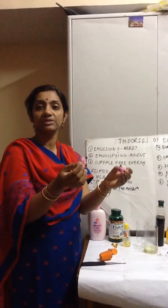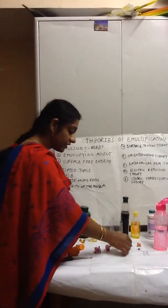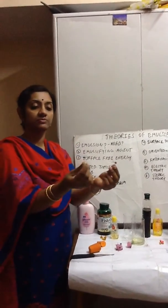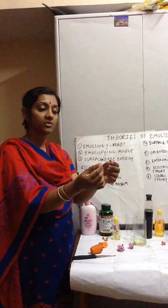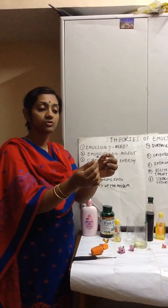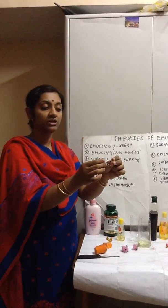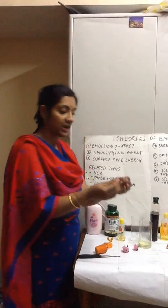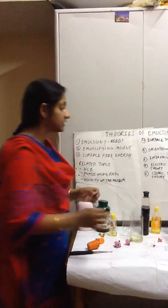The other theory is the steric stabilization theory. Imagine each one is one oil globule. Here the emulsifying agent is adsorbed onto the surface of the globule, and the emulsifying agent is so large compared to the globule that there is steric hindrance. The globules cannot come close to each other because of spatial orientation, and coalescing or merging is prevented. This is the steric stabilization theory.